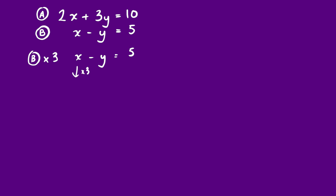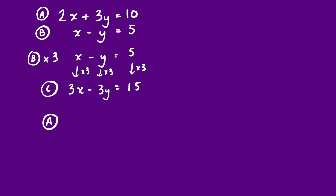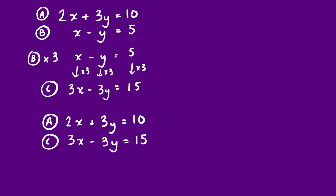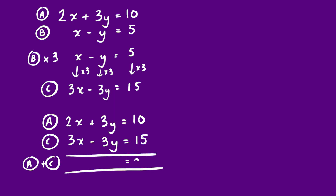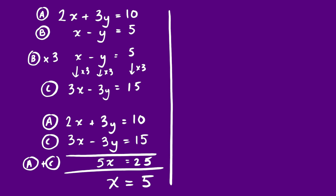Multiplying equation B by 3: x × 3 = 3x, −y × 3 = −3y, and 5 × 3 = 15. So the new equation C is 3x − 3y = 15. Now equation A has positive 3y and equation C has negative 3y, so adding A and C together: 10 + 15 = 25; 3y + (−3y) = 0 — the y's are gone; 2x + 3x = 5x. So 5x = 25, meaning x = 5.